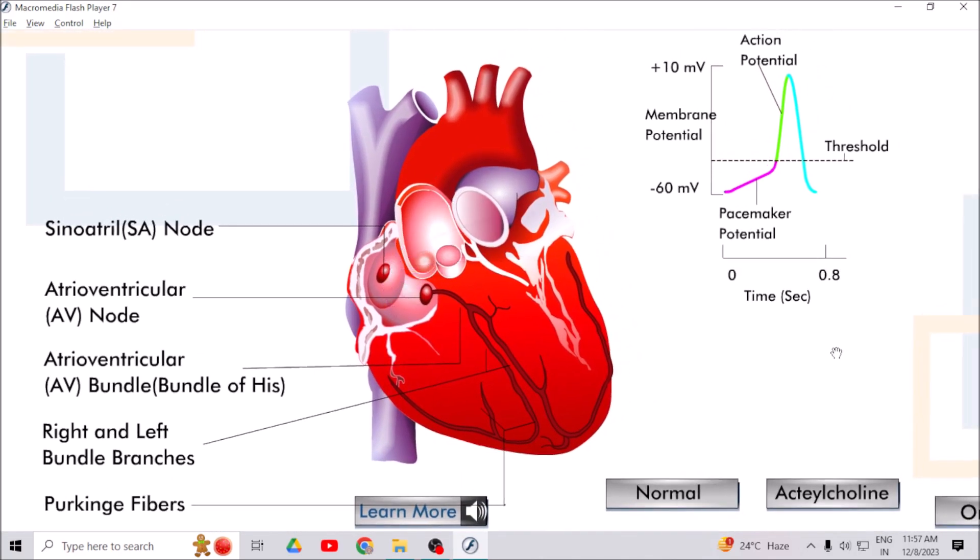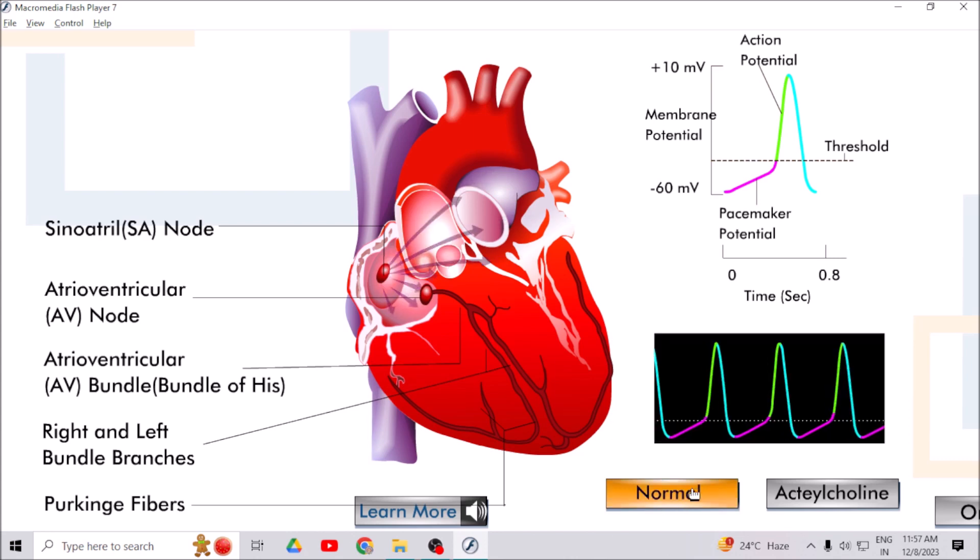Acetylcholine regulates the pacemaker of the heart which controls heart rate. Acetylcholine reduces the rate of depolarization and thereby reduces heart rate. You can see the gap between two action potential peaks is more in the presence of acetylcholine.